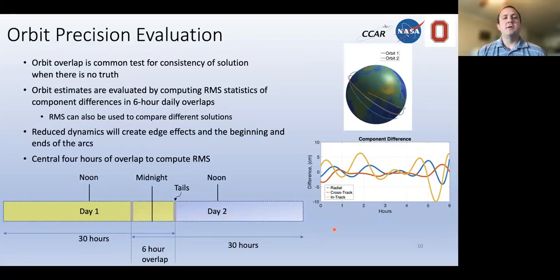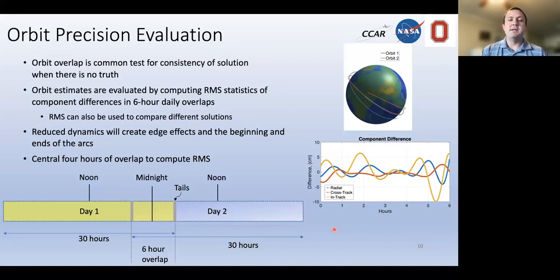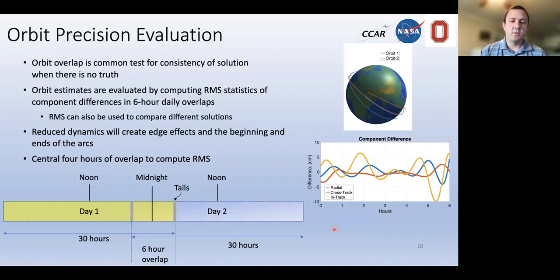One of the most common solution evaluation metrics are orbit overlaps. We process 30-hour arcs centered at noon for each day, resulting in six hours of overlap at midnight between consecutive days. From the overlap period, we compute component differences in radial, cross-track, and in-track from the central four hours, then compute a single RMS statistic per overlap period. Over time, this gives an idea of how precise or repeatable the solution strategy is. GRACE is used to evaluate accuracy.